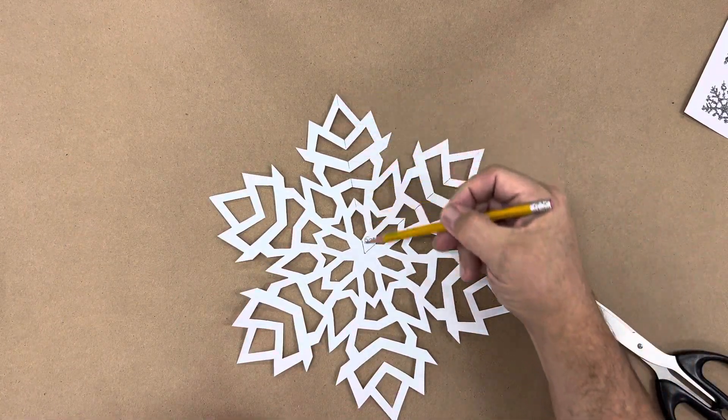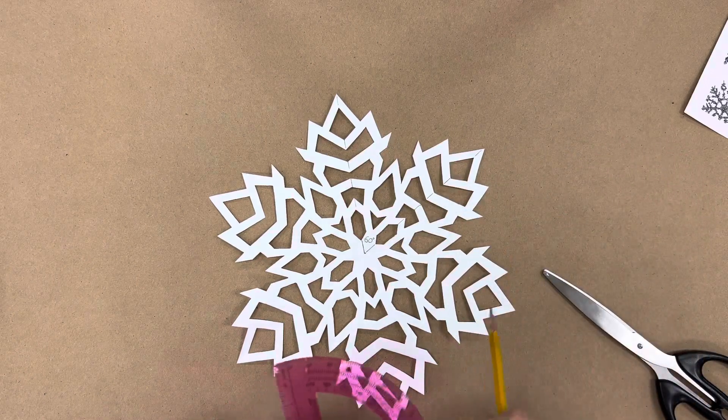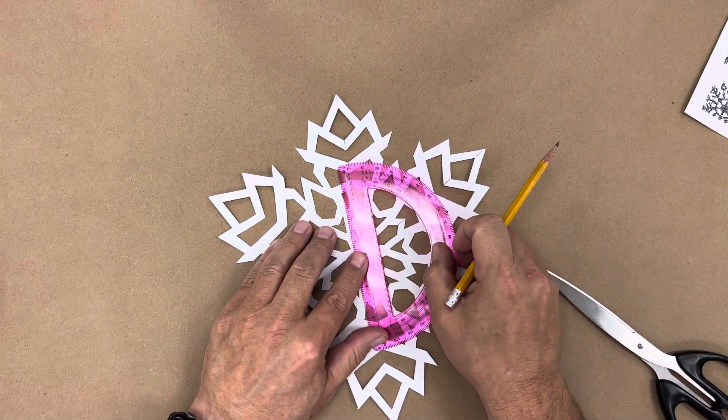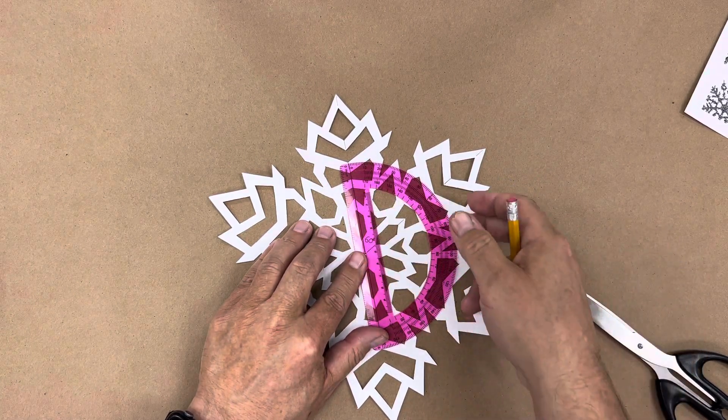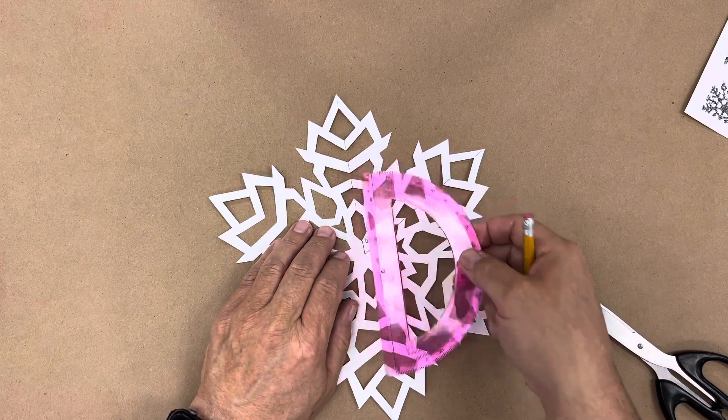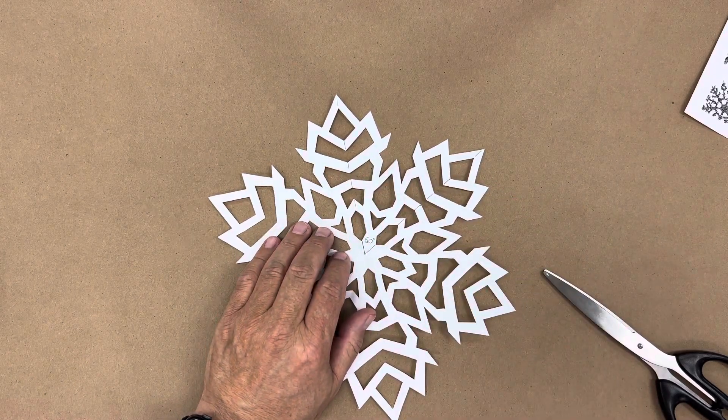So if we go from point to point on a snowflake and use a protractor, you can see that it is exactly 60 degrees. And that's not a natural fold. It's easy for us to fold things in half, but folding things in thirds can be a bit of a challenge.